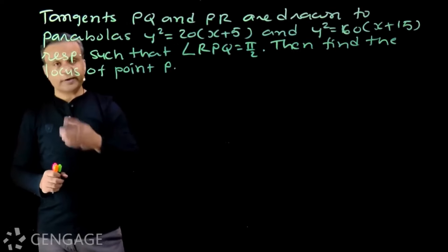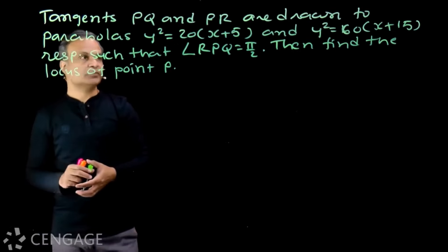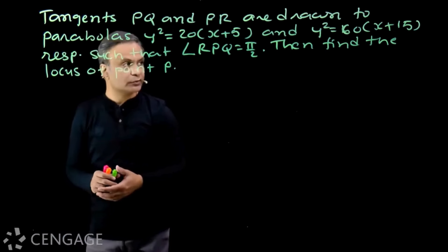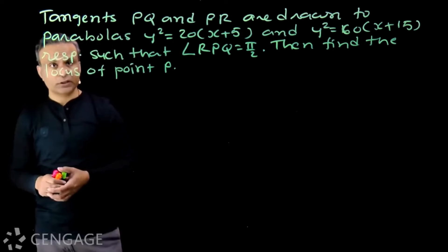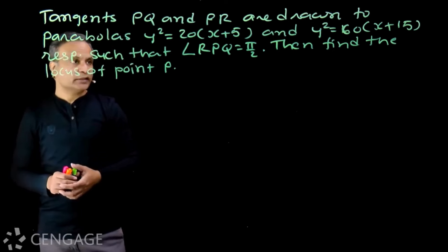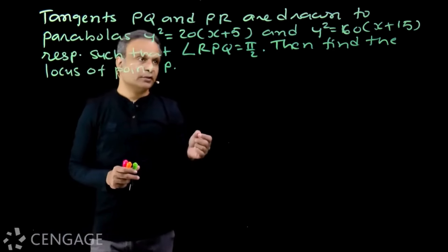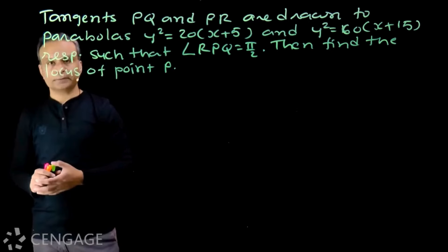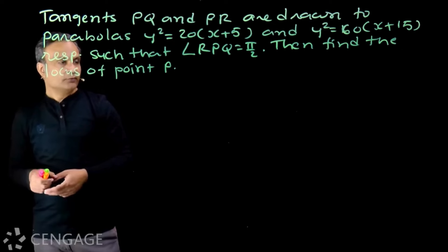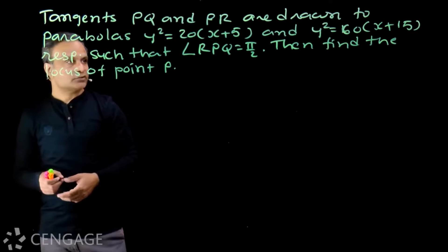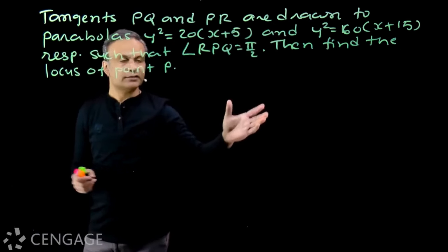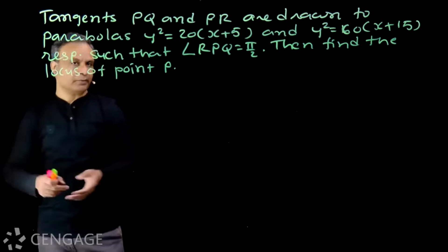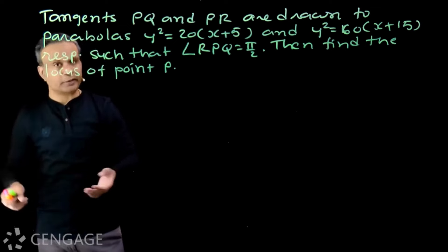Here we have a very interesting question. Tangents PQ and PR are drawn to the parabolas y² = 20(x + 5) and y² = 16(x + 15) respectively, such that angle RPQ is π/2. Find the locus of point P. From point P, we draw one tangent to each parabola, and these two tangents are perpendicular to each other.